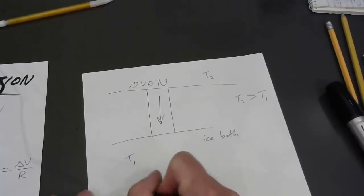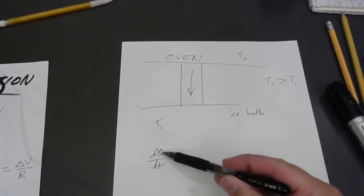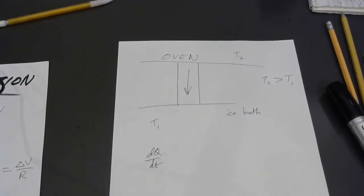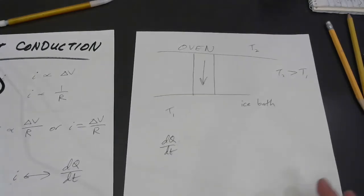So, dQ dt now, well, that's going to be the number of joules per second. We're using the letter Q for heat, but remember heat is just energy being transferred thermally due to all those sub-microscopic collisions between jiggling particles, right? That's what conduction is.